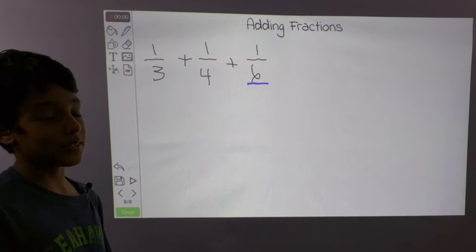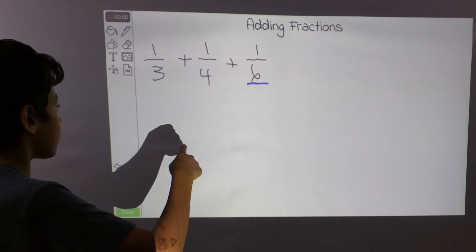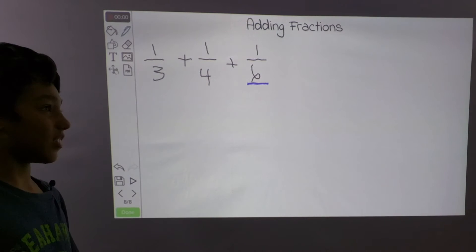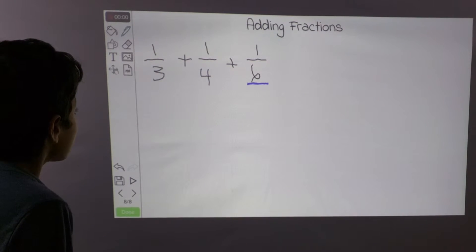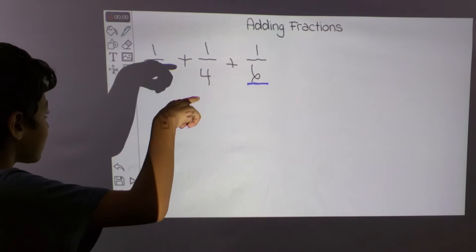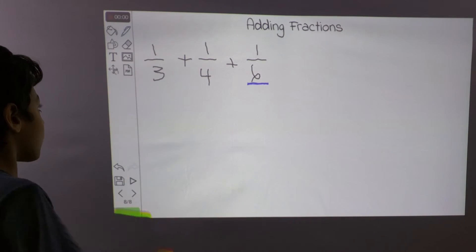So let's see another multiple of 6, which is 12. So we know 6 goes into 12, 3 goes into 12, but does 4 go into 12? Yes, it does. So let's see what you have to multiply to all of these fractions to make the denominator 12.